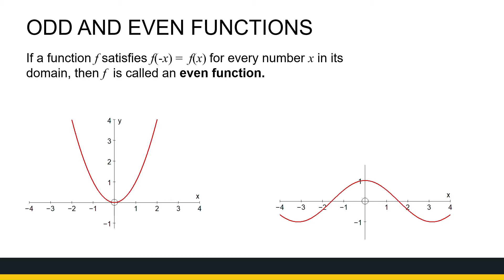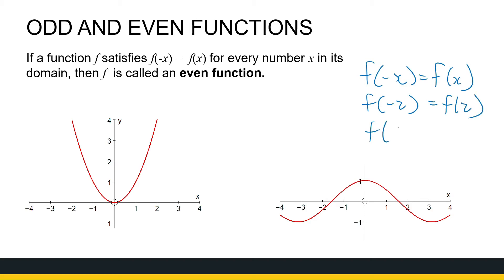So what are we saying? f of minus x is equal to f of x. That means for every element of the domain, f of minus 2 will equal f of 2, and f of 3 will equal f of minus 3. This is going to happen all over its domain. Here are two examples of even functions: y equals x squared and y equals cos x.